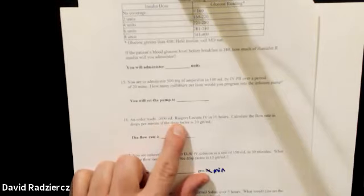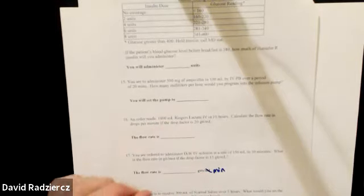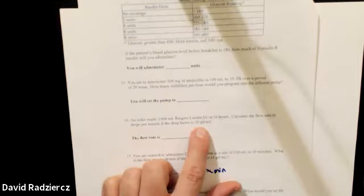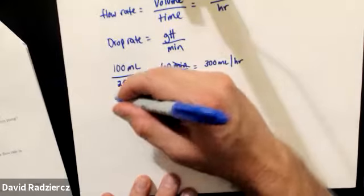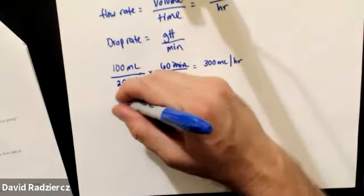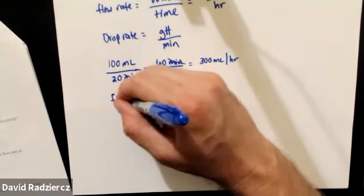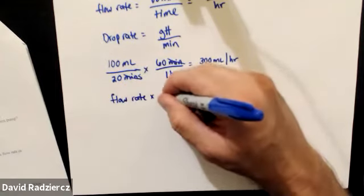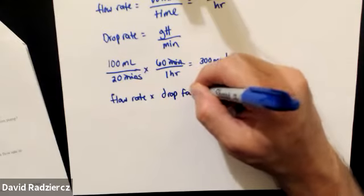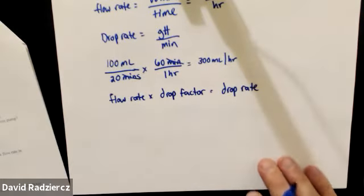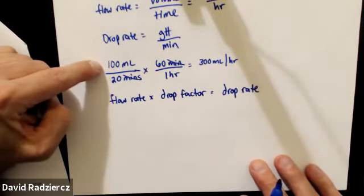For question 16: 1,000 milliliters of Ringer's lactate IV over 10 hours, calculate the flow rate in drops per minute with a drop factor of 20. For drop rates, I need two pieces of information: the flow rate and the drop factor.